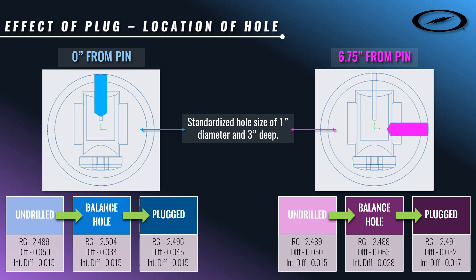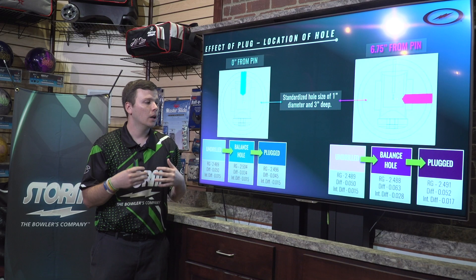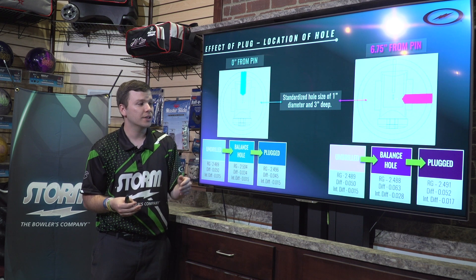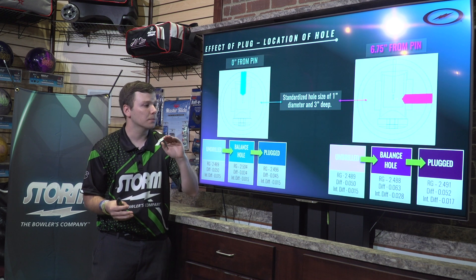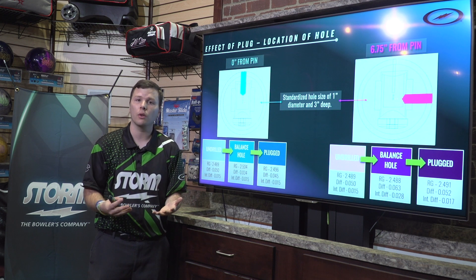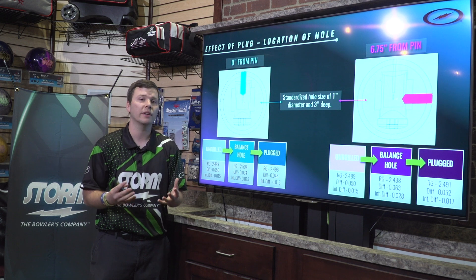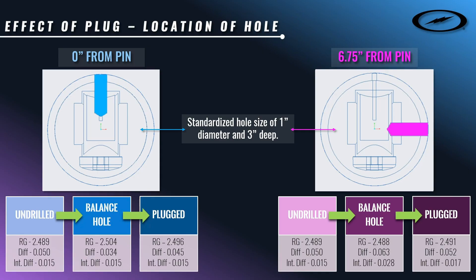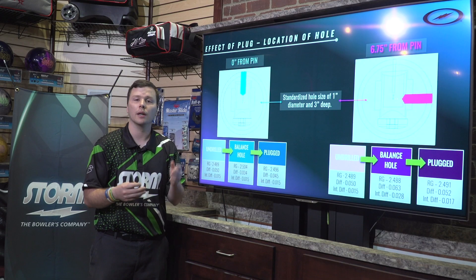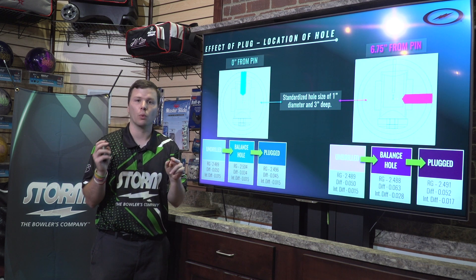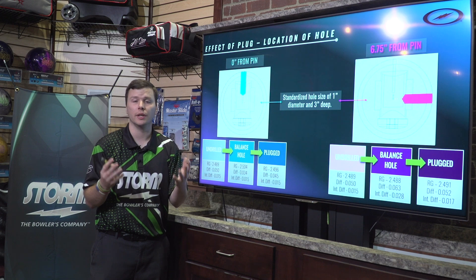Think about that. Most of the balance holes used in competition were used to help make the bowling ball hook a little bit more. You're going to see a big difference if your customer has a ball with 63 total differential after it's been drilled, and then you plug that hole and it goes all the way back to 52. They're going to see a significant change in ball motion. The intermediate differential acts the exact same as the total differential here because it's directly on the Y-axis, which governs intermediate differential between the Y and Z axes.